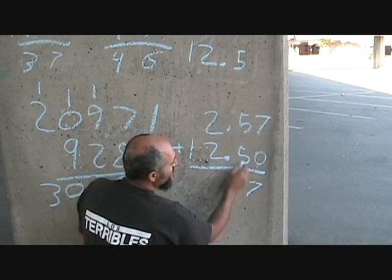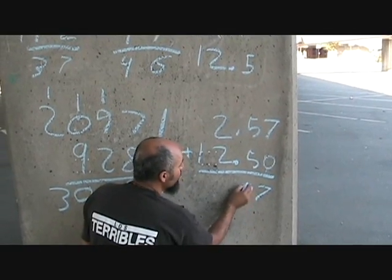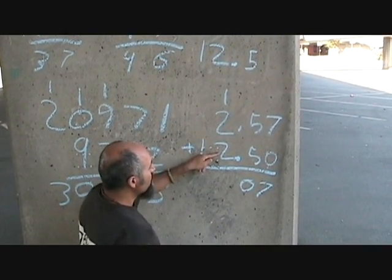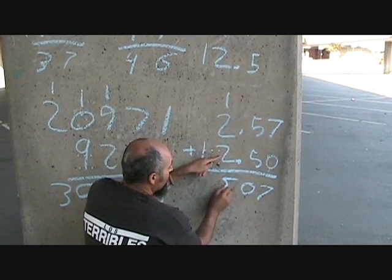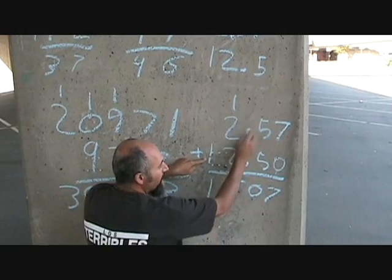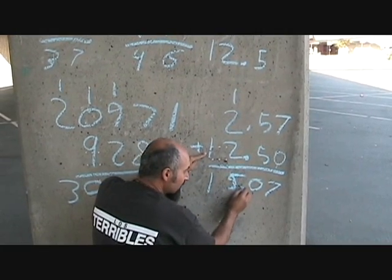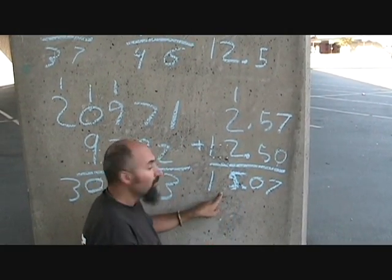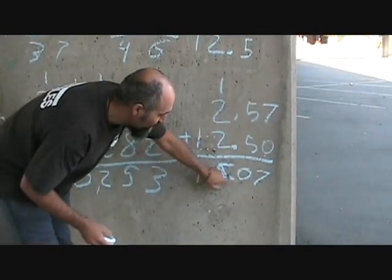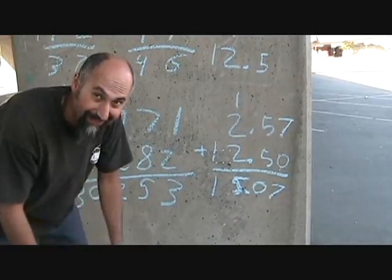So that becomes 7. 5 plus 5 is 10, so you add your 0, bring the 1 up here. 1 plus 2 is 3, 3 plus 2 is 5. Nothing came up, and then you have your 1, you keep it down here, and the decimal place stays there. So 2.75 plus 12.5 is 15.07. That's adding.